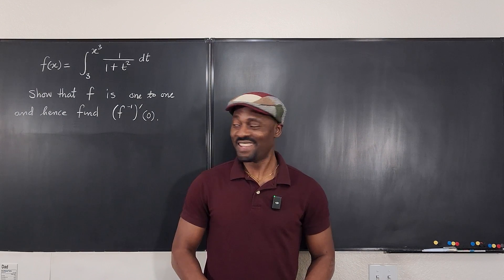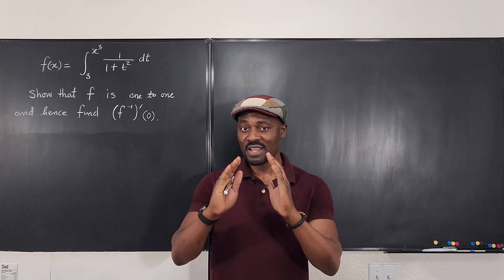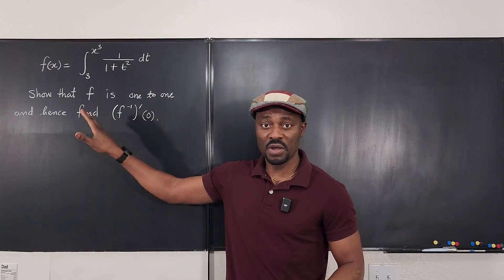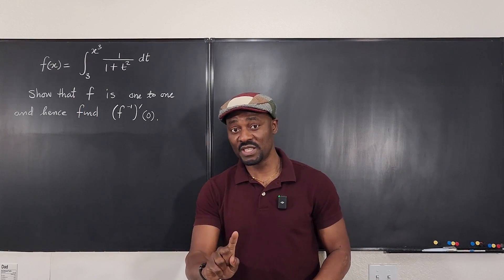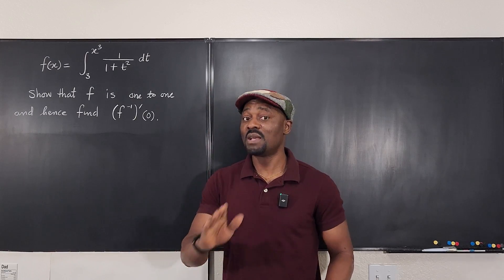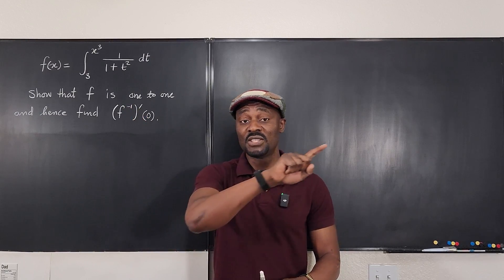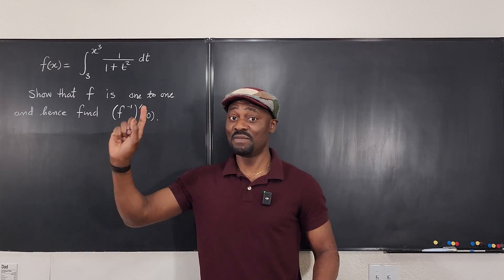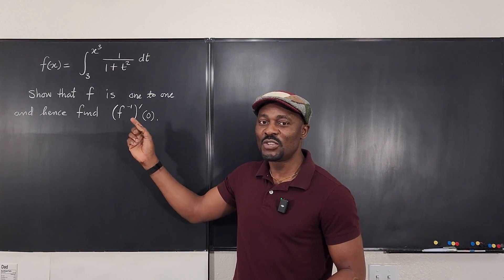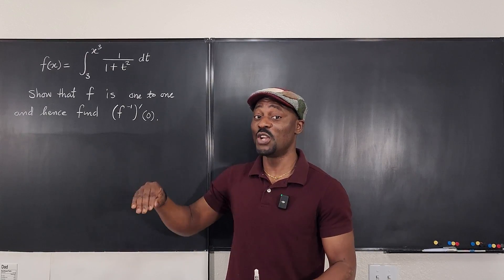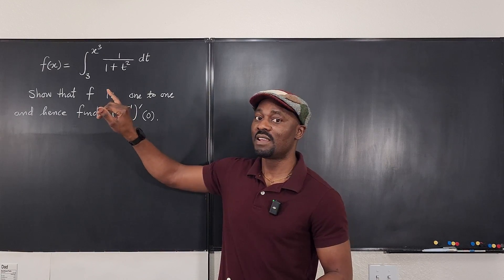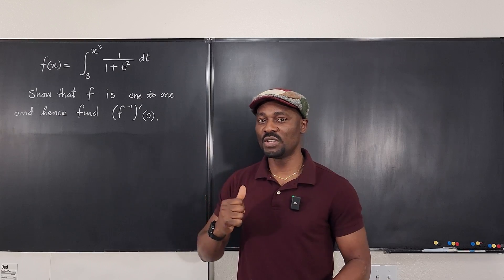Welcome to another video. This question involves a function written in the form of an integral. We're required to show that the function is one-to-one. The reason you need to know if a function is one-to-one is to know whether it has an inverse. If a function is not one-to-one, it fails the horizontal line test and cannot have an inverse. To find the derivative of the inverse, we must first know that the function is invertible — and it's invertible only if it's one-to-one.